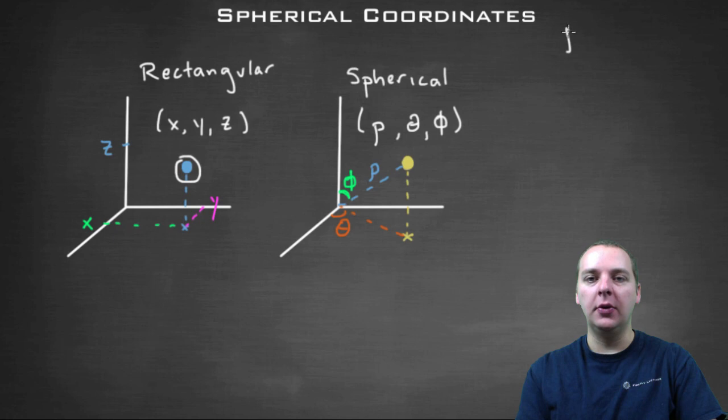Let me write this down for you. Rho looks like almost like a letter P that has a little tail or a little leg on the end.